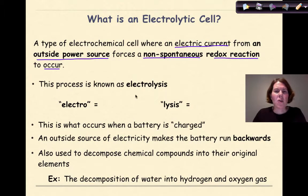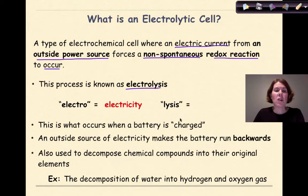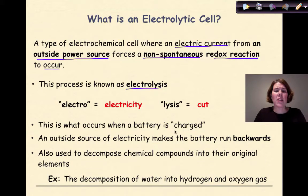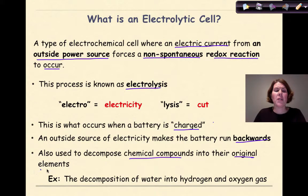This process is also known as electrolysis. Electrolysis literally means electricity — from 'electro' — and 'lysis,' which means to cut. This is what's happening when your battery is charged; an outside source of electricity makes the battery run backwards. It's also used to decompose chemical compounds into their original elements, such as the decomposition of water back to elemental hydrogen gas and oxygen gas.